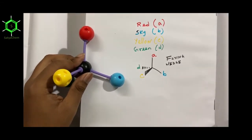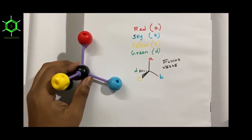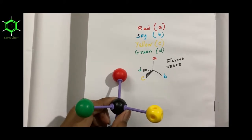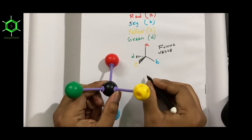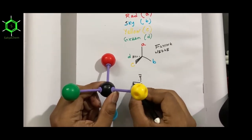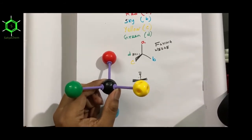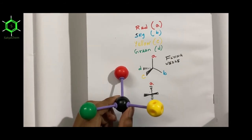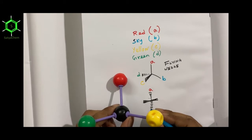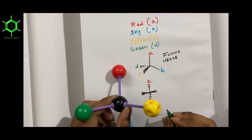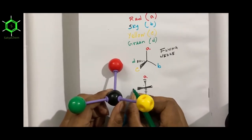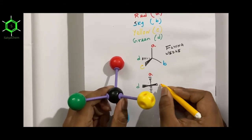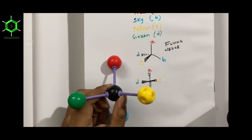Now we are trying to convert this flying wedge representation into the corresponding Fisher projection. To do this, we tilt the system towards the right. After tilting, red is below the plane of the paper, sky is below the plane of the paper, green on the left is above the plane of the paper, and yellow is also above the plane of the paper.